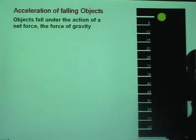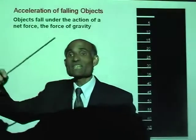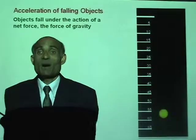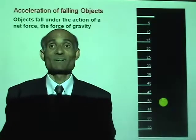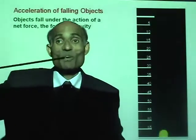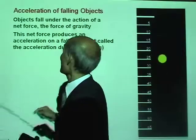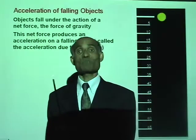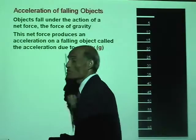Each second, the distance a falling object travels gets greater and greater. That means a falling object is accelerating — it has an acceleration. The force that produces that acceleration is the force of gravity, and we call this acceleration the acceleration due to gravity.